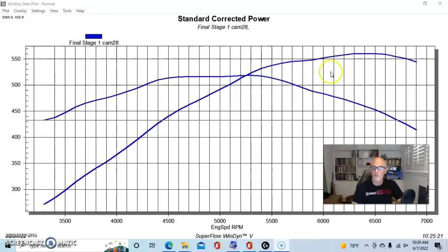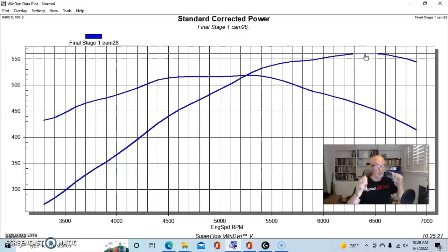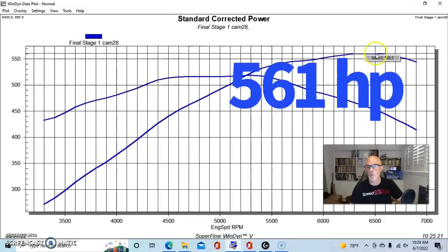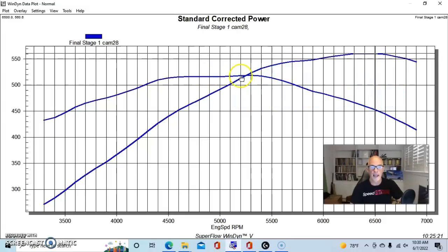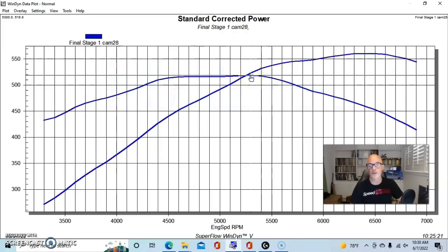All from the guys at Airflow Research, designed to work with these rec port style heads, especially their heads. So our LS3 crate motor bottom end with the stage one camshaft and the Airflow Research heads, stock LS3 intake manifold as I said, made 561 horsepower and peak torque checked in at 519 foot-pounds of torque.